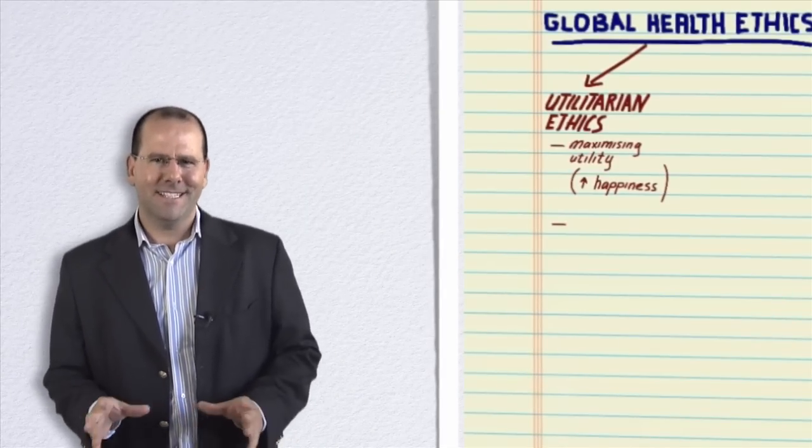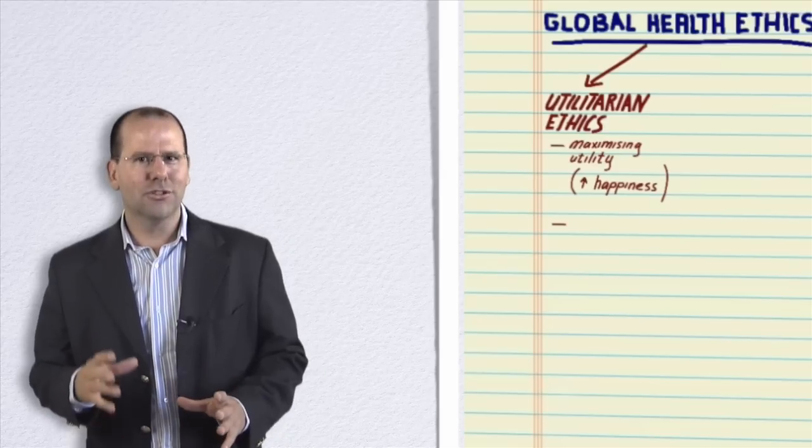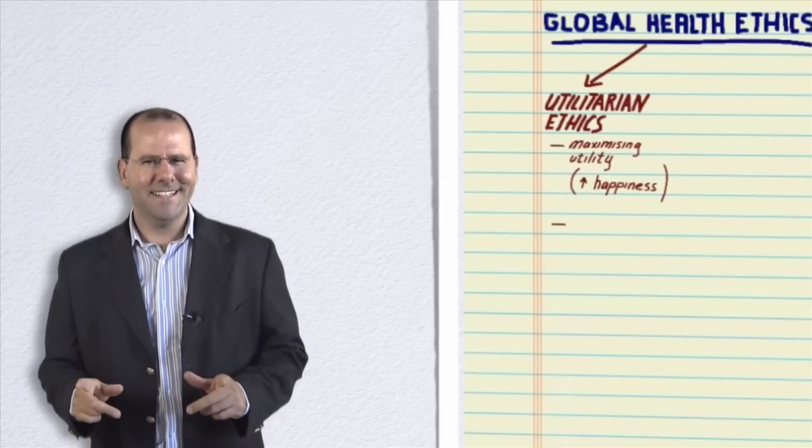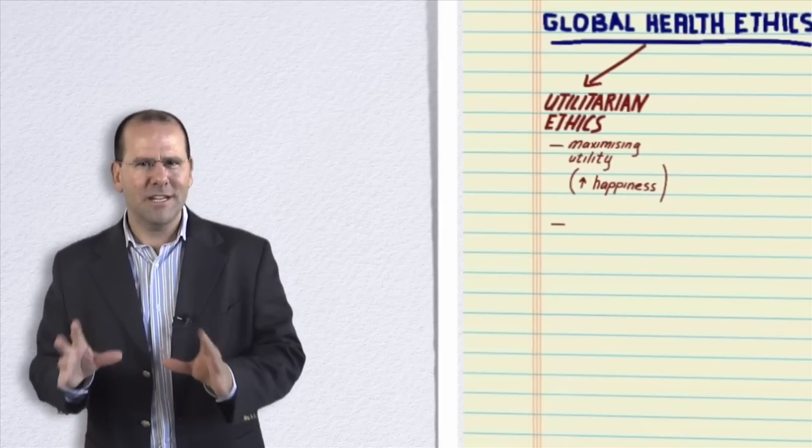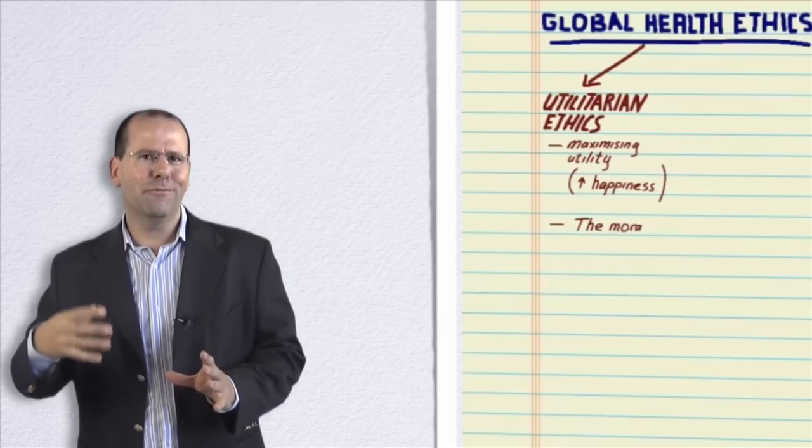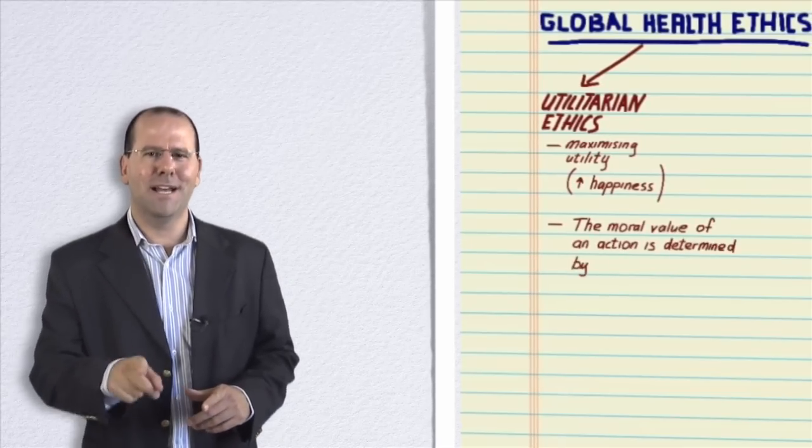For now it suffices to say that this is an example of consequentialism, and that is to say that consequentialism is basically the idea that the moral value of an action is determined by its consequences.